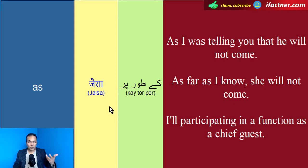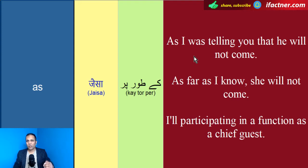As I was telling you — jaysa ke mein aapko bata raha tha. Pehla sentence hai: 'As I was telling you that he will not come.' Matlab: jaysa ke mein aapko bata raha tha, wo nahin aayega.